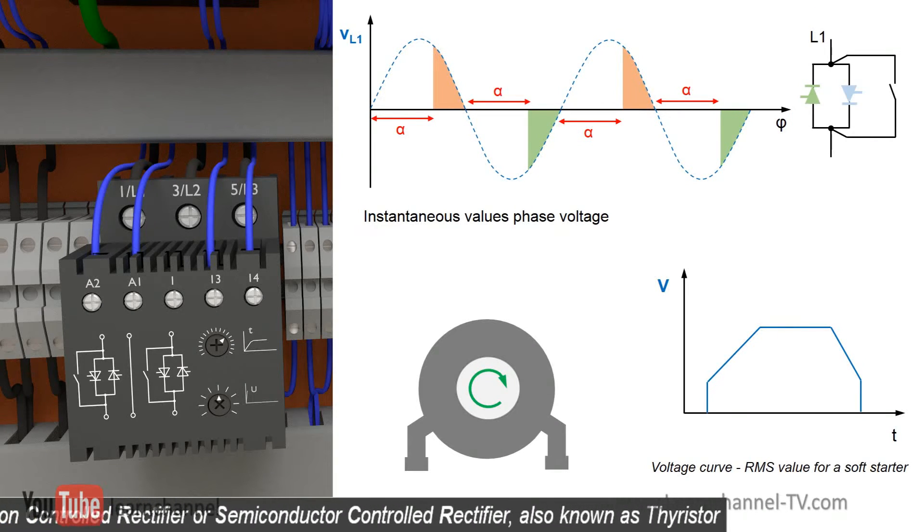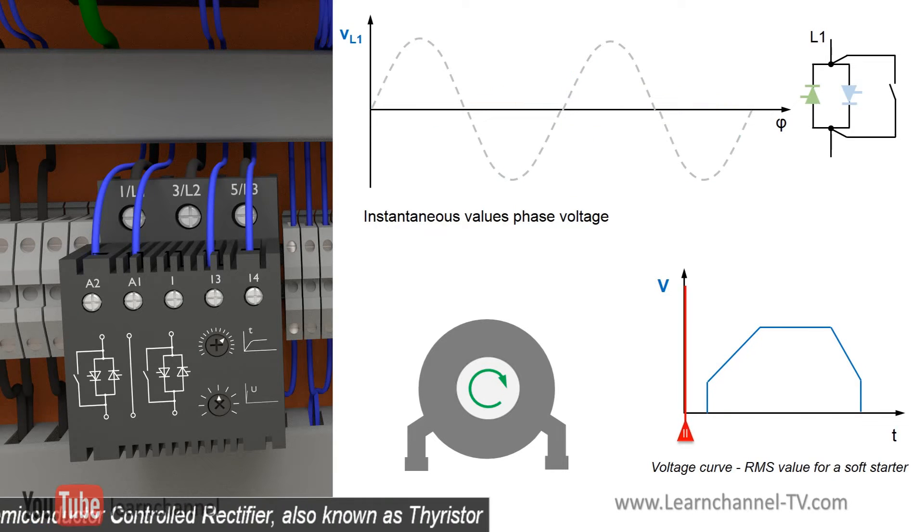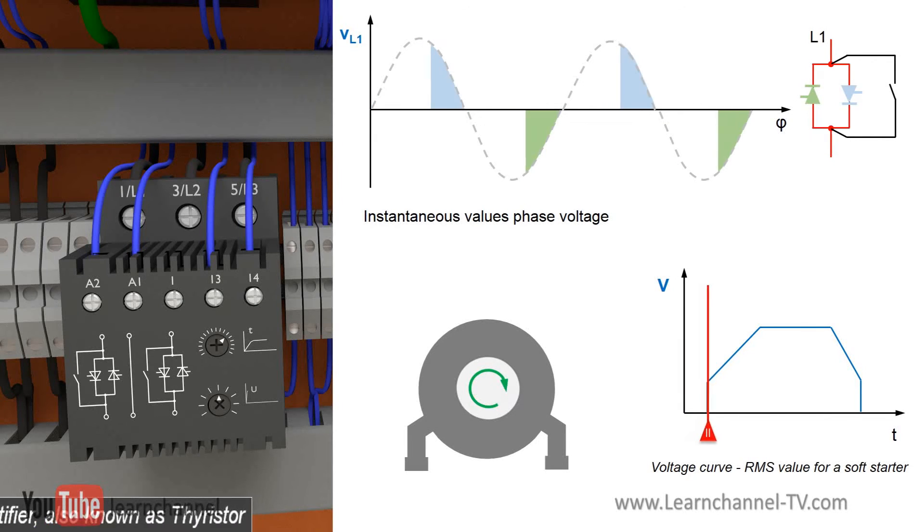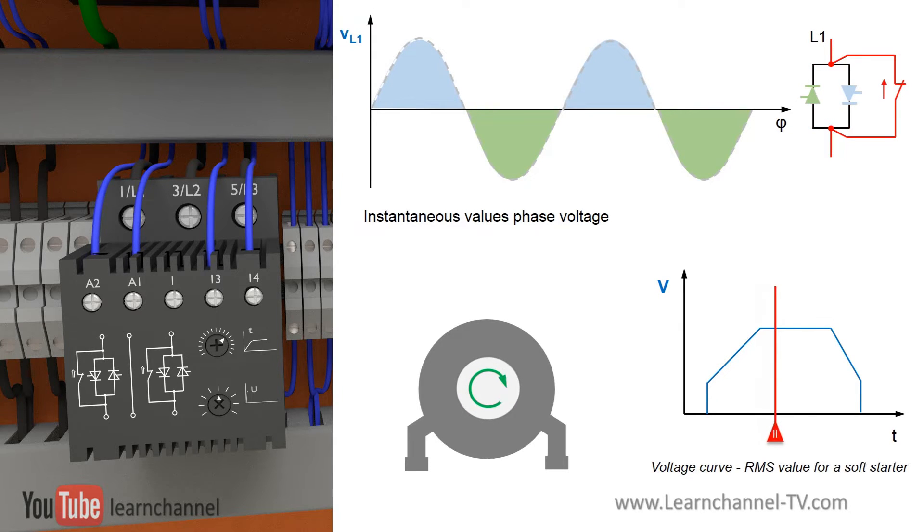The so-called trigger angle determines when the SCR allows to switch the output on, and thus the value of the effective voltage. This way, the soft starter enables a selective reduction in starting current associated with a continuous and surge-free increase in torque.